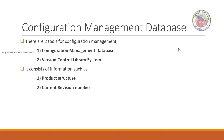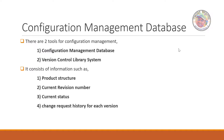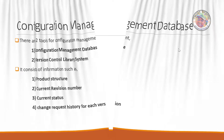The CMDB also contains the current revision number, so you can use the current version. The current status of the product is tracked — if you use the software, you can download it. Next is the change request history for each version. If changes are needed in the future, you can record those changes. This is the change request for each version.